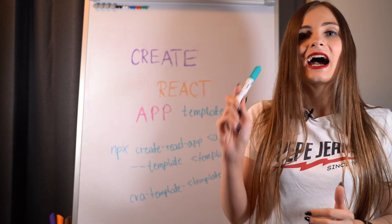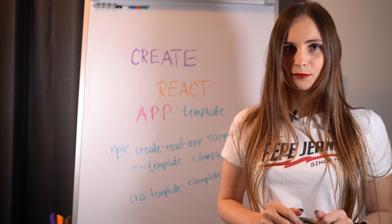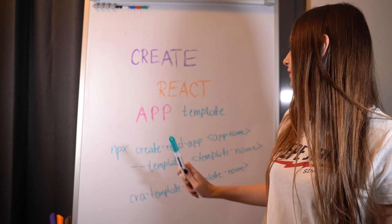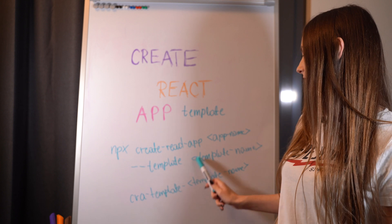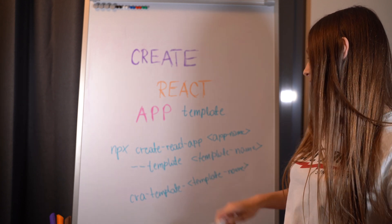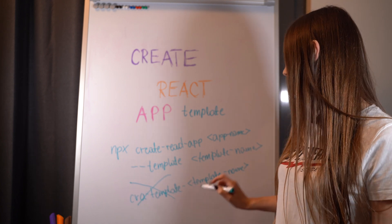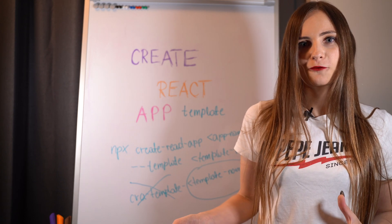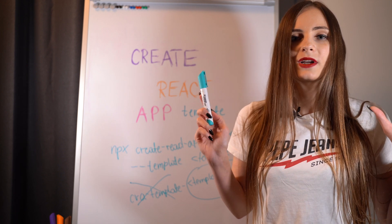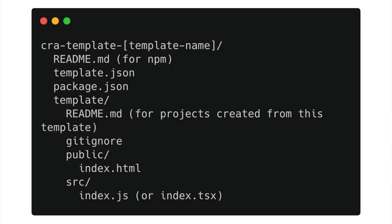To use templates with Create React App, we use `npx create-react-app`, pass our app name, and then the `--template` flag followed by just the short name of the template. To create your own custom template, the most important thing is to include the required files that you can see on the screen. Starting from that point you can add any dependencies you would like, and voilà — you have your custom template for Create React App.